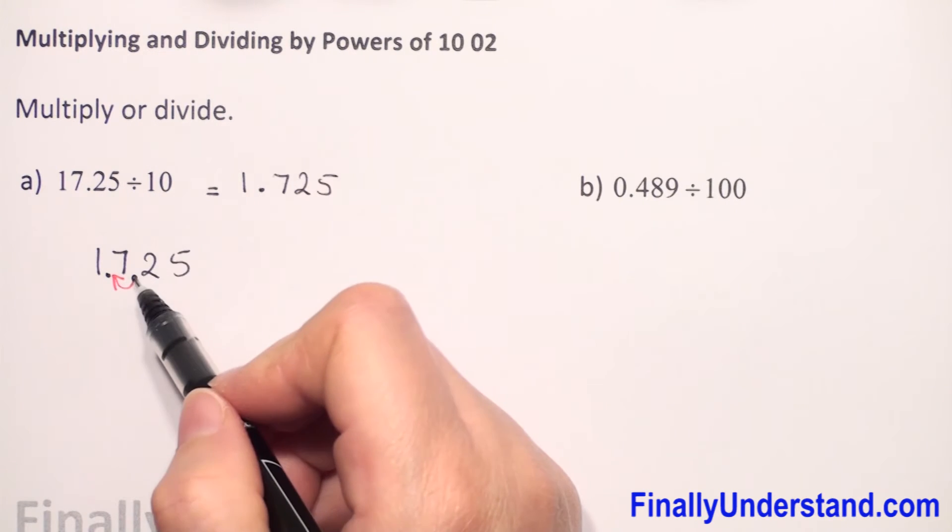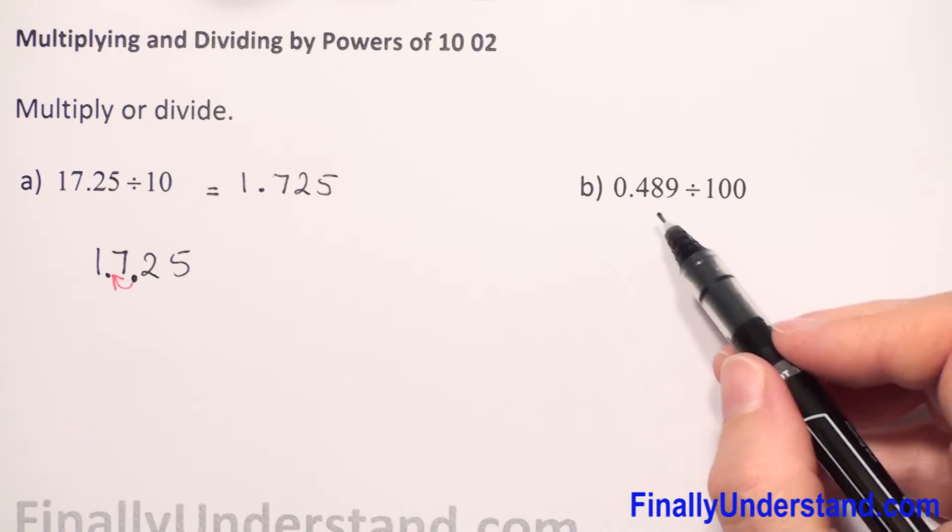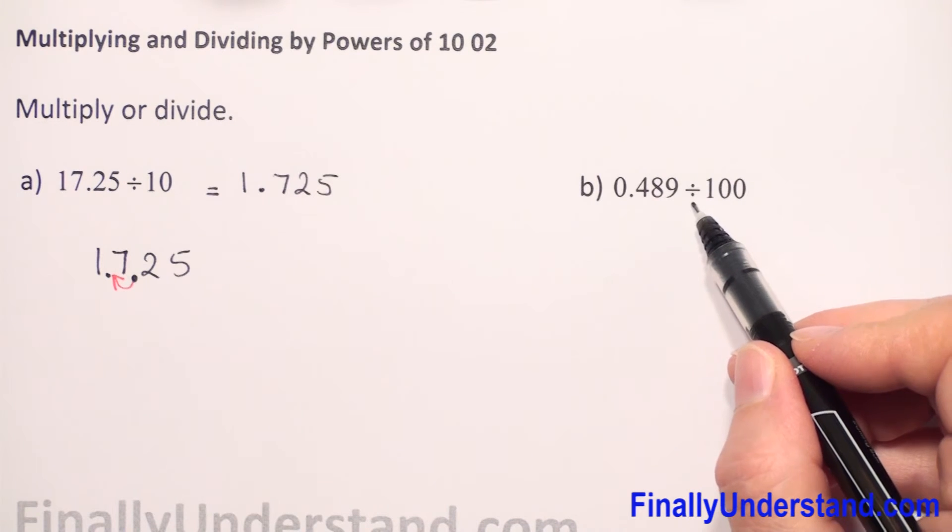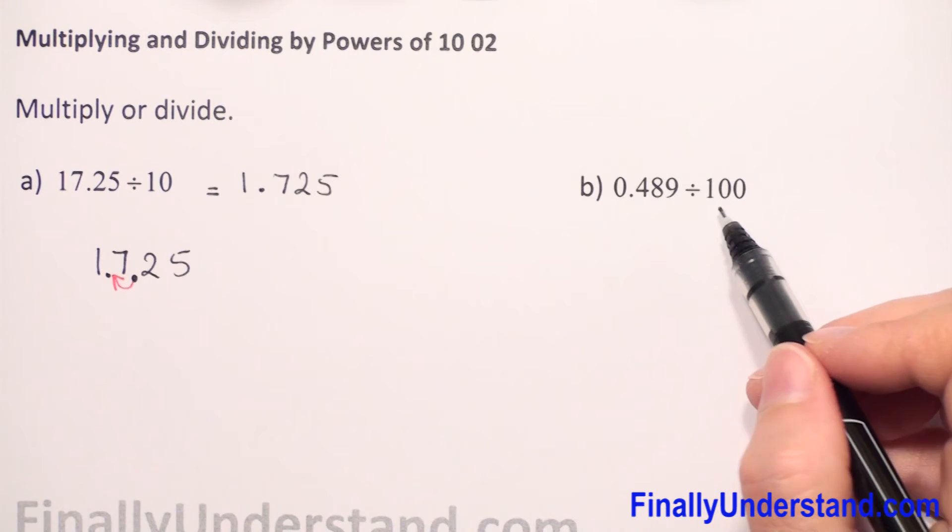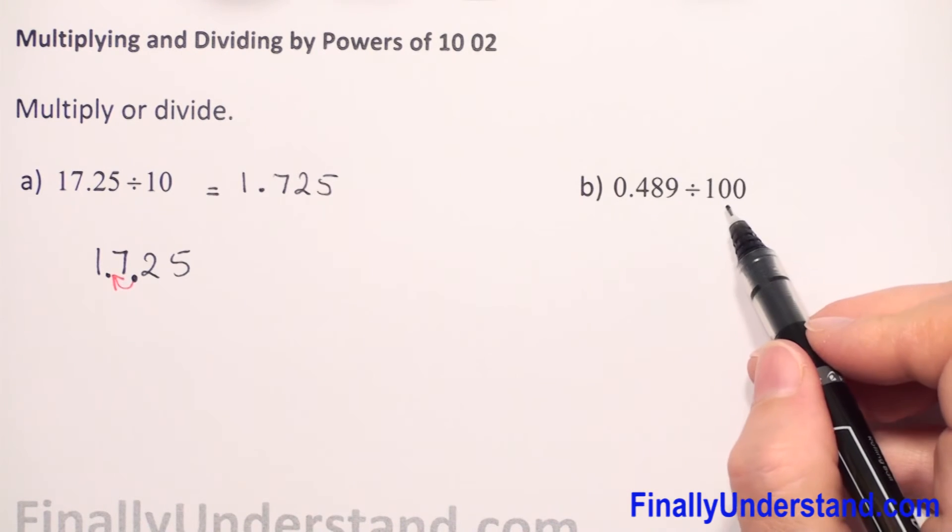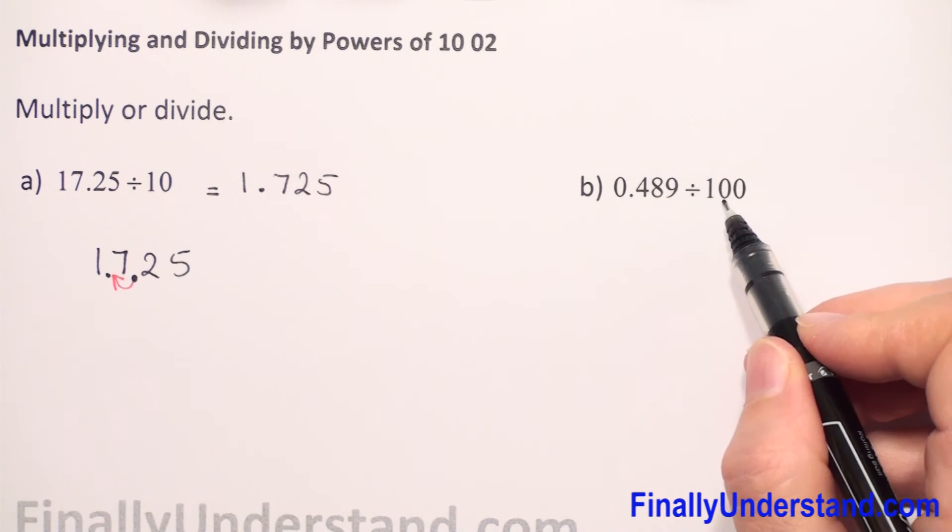When we divide, we move to the left always, and how many places? We count the zeros. One zero, so we move one place. Next example: we have division, so we have to move to the left always when we divide by powers of 10. And what else? We have here two zeros. It means we have to move two places to the left.